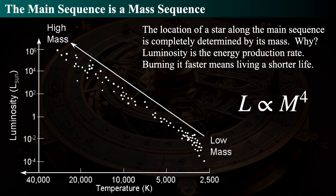If the main sequence is a mass sequence, a star's location is completely determined by its mass. The luminosity is the energy production rate — how much energy it must produce. If a star is more luminous, it must be burning its fuel faster, and if it's burning faster it has a shorter life. There's not a huge range of masses from 1% to 100 times the mass of the sun, yet the luminosity is incredibly different. Therefore, high-mass stars live shorter lives and low-mass stars live longer.